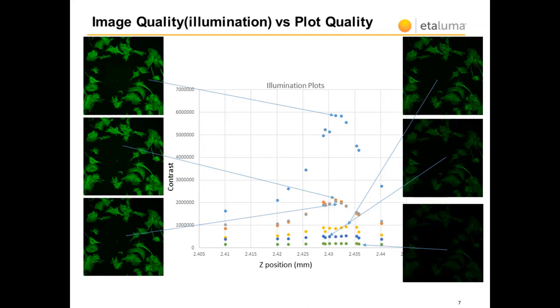Here are some real examples of image quality issues and their effect on the autofocus plot. As illumination is decreased, signal decreases, and so does the contrast plot.